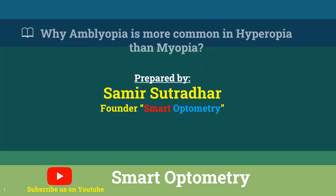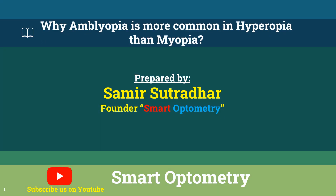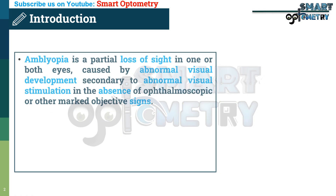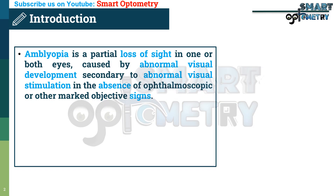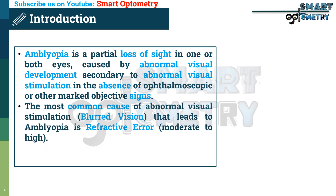Today I will discuss why amblyopia is more common in hyperopia than myopia. Amblyopia is a partial loss of sight in one or both eyes caused by abnormal visual development secondary to abnormal visual stimulation, in the absence of ophthalmoscopic or other marked objective signs. The most common cause of abnormal visual stimulation — that is, blurred vision — that leads to amblyopia is refractive error.